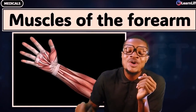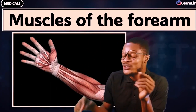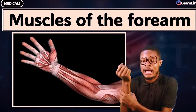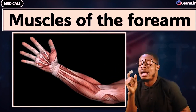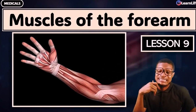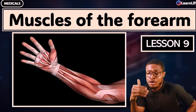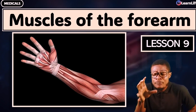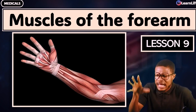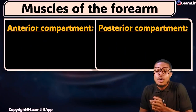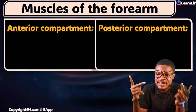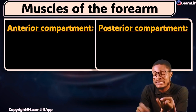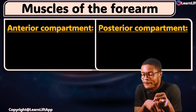Hello guys, very quickly I'm going to be looking at the muscles of the forearm — your forearm, or your antebrachium. This is lesson nine, muscles that has to do with the forearm. I'd like you to pay me solid attention as we go together. The muscles of the forearm are divided into two: the anterior compartment and the posterior compartment.